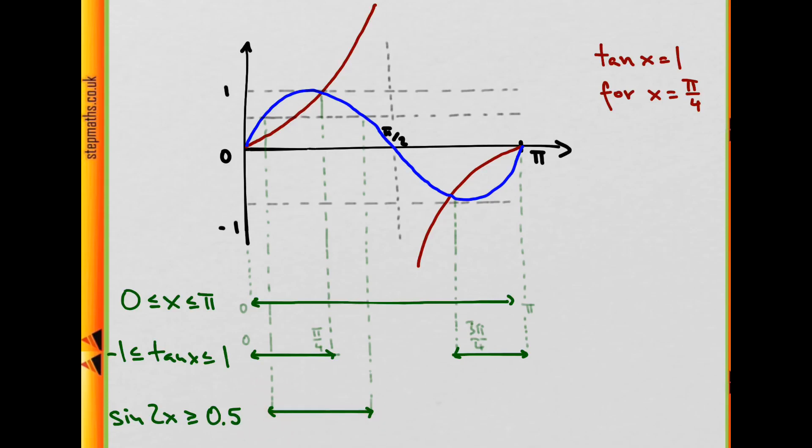So one thing we know for sure is that sin of x equals 1 half when x is π by 6. And what that means for us is that sin of 2x, our function, equals 1 half when x is π by 12. When we multiply this number by 2, plug it in, we should get 1 half. So that's π by 12 at one end of the interval.